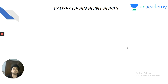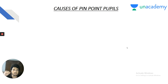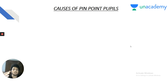Pontine hemorrhage is the cause of pinpoint pupils — miotic pupils not responding to light. There are only three clinically important causes of pinpoint pupils in medicine: organophosphate poisoning, opioid poisoning, and pontine hemorrhage. You must be able to differentiate between them clinically.